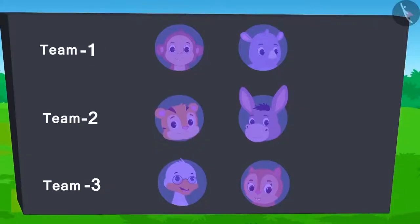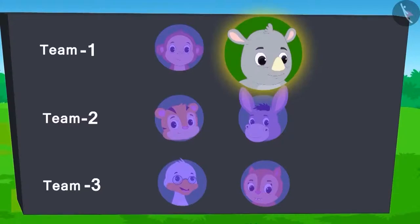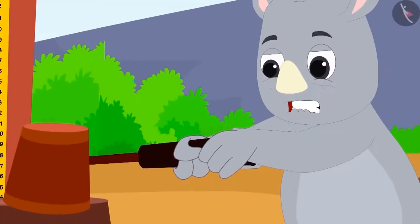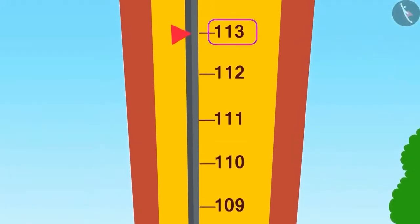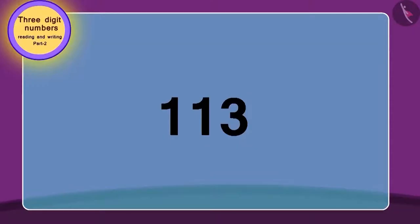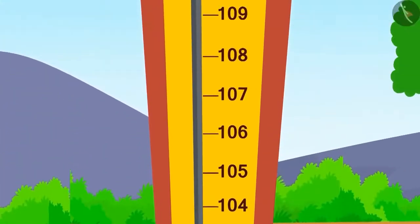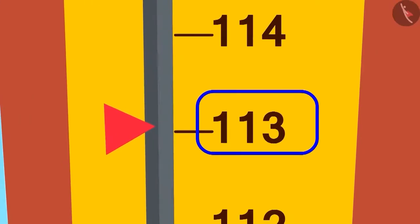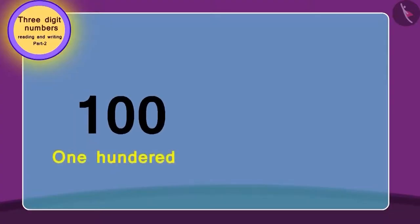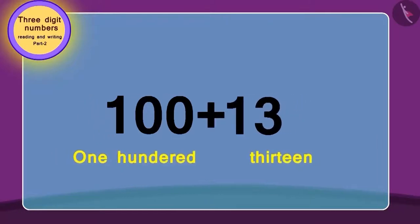First, from team 1, Gagu tried. He used his full strength and the flag reached the number 13 marks above 100. Can you read this number? Let's learn how to read it. This number is 13 points above 100, so we will add 13 to 100. In this way, the number becomes 113.